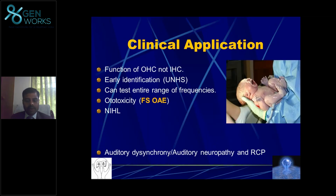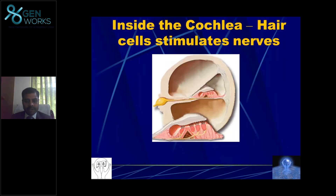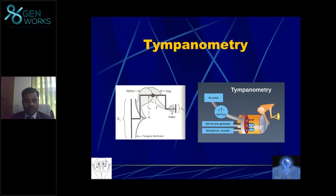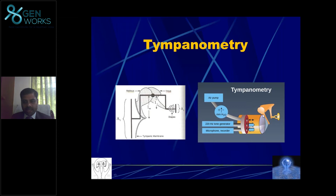There are two types of evoked OAE: transient evoked OAE and distortion product OAE. OAE is done by placing a probe in the ear canal. This probe will emit some sounds, and it also has a microphone which can record sounds. What it is recording are the sounds emitted by the outer hair cells.